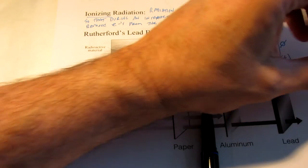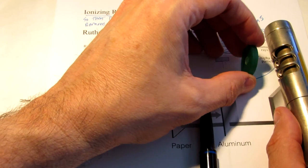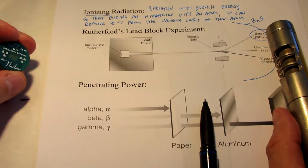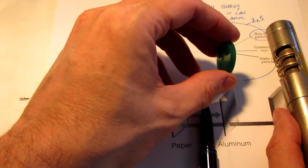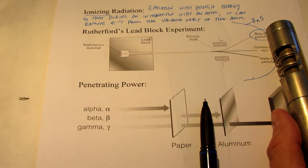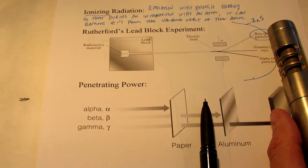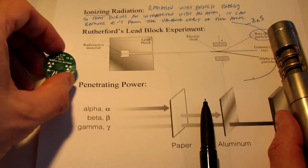And you can see that the intensity, of course, builds as we bring it closer to the detector. In fact, we're going to do an experiment later and we'll measure how intensity decreases as I move the particle farther away from the counter.